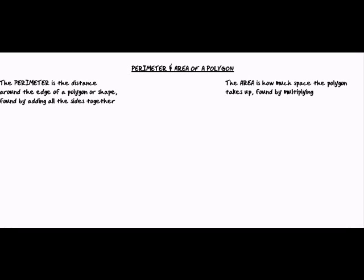In this lesson, we're going to be finding the perimeter and area of a variety of polygons. The perimeter is the distance around the edge of the polygon, or the two-dimensional shape, and it's found by adding the sides together. The area of the polygon is how much space it takes up, and it is found by multiplying. We multiply different things depending on what the shape is, so we'll get more into detail with area with each example.